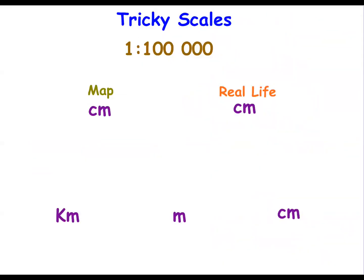If you have something with a large scale, for example, 1 to 100,000, all it's telling us is that 1 centimeter on the map is 100,000 centimeters in the real world. Now, if you measure something on your map, the distance between two towns, and let's just say it's 8 centimeters, then our scale here is multiplied by 8. So we do the same on the other side and we end up with 800,000 centimeters.